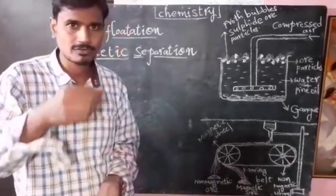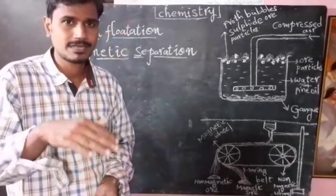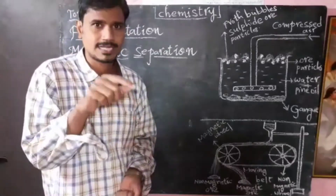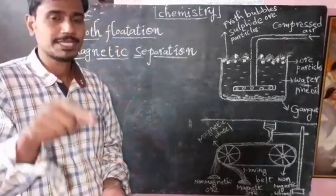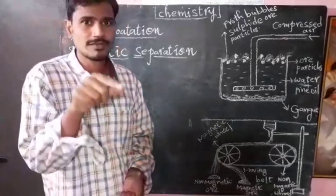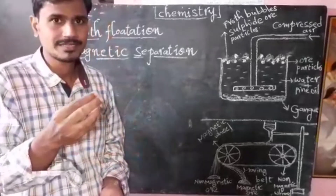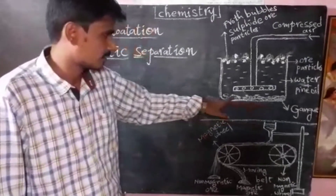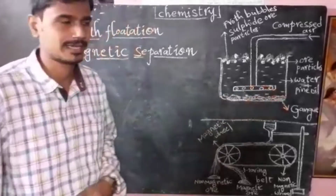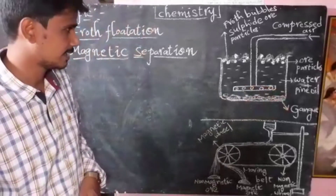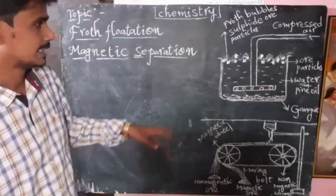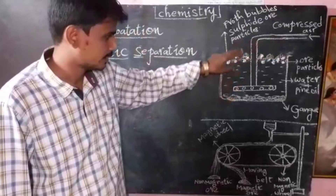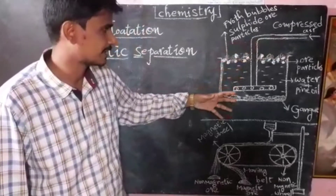The sulfide ore has a non-wetting property — sulfide ore and water do not mix, meaning water is not absorbed. The impurities present in the sulfide ore get wetted — the impurities absorb water. Air under pressure is then blown in to produce effective froth in the water.